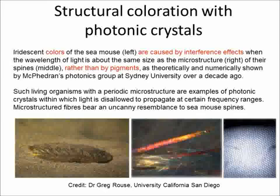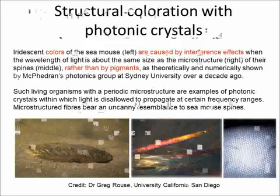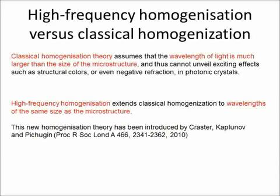In this particular case, the wavelength of light is about the same size as their microstructure. For homogenization theories, classical homogenization assumes that the wavelength of light is much larger than the length scale of the microstructure. High-frequency homogenization extends classical homogenization to wavelengths that can be of the same size as the microstructure.